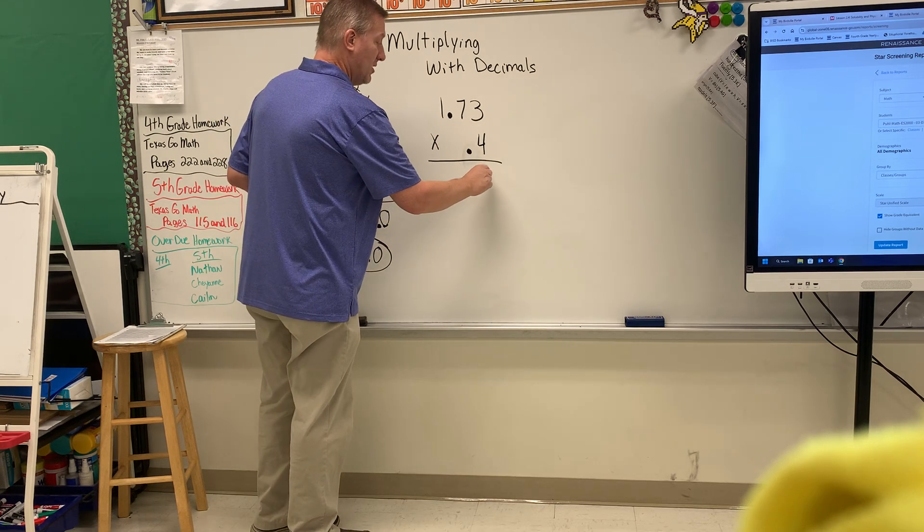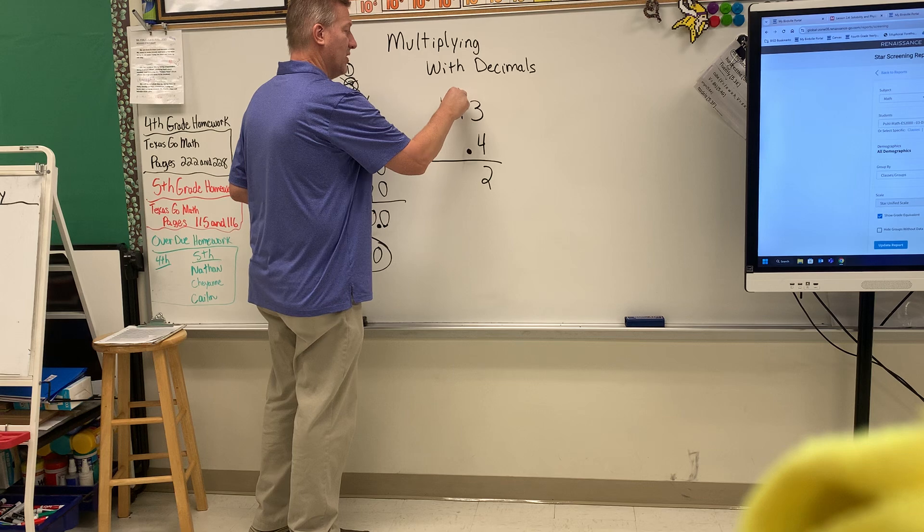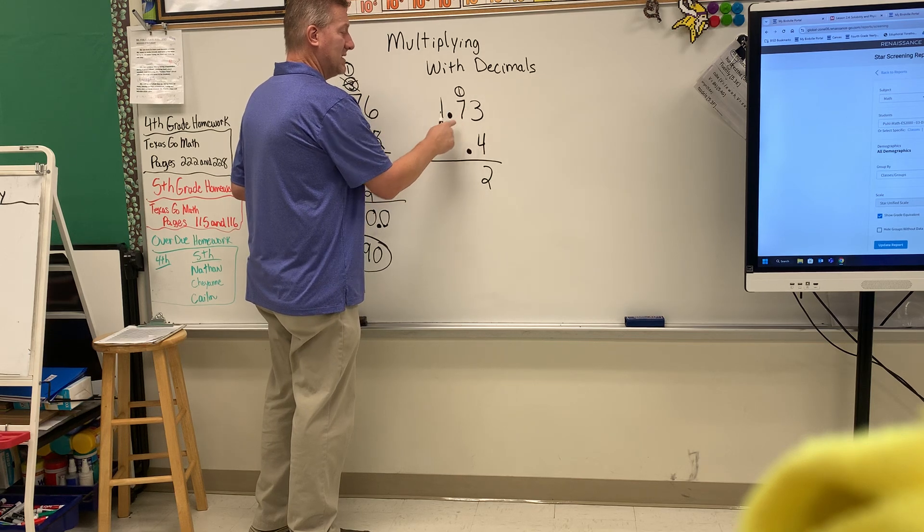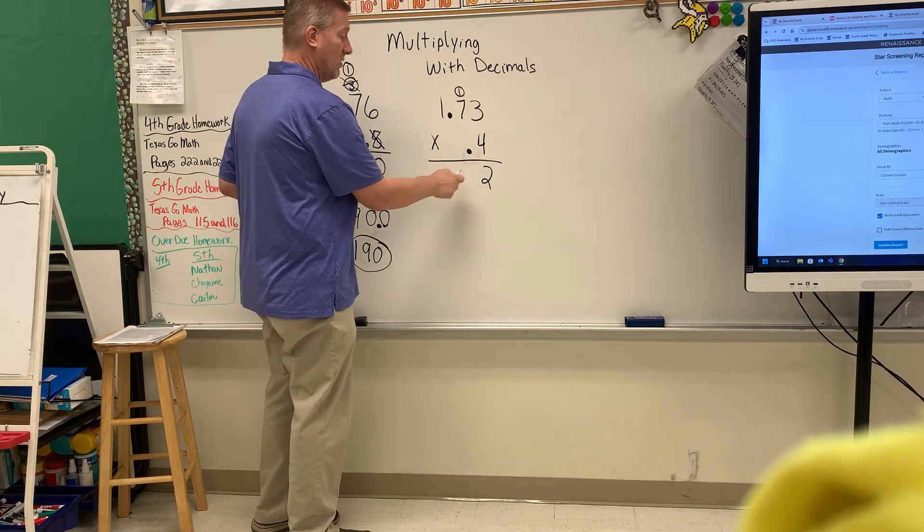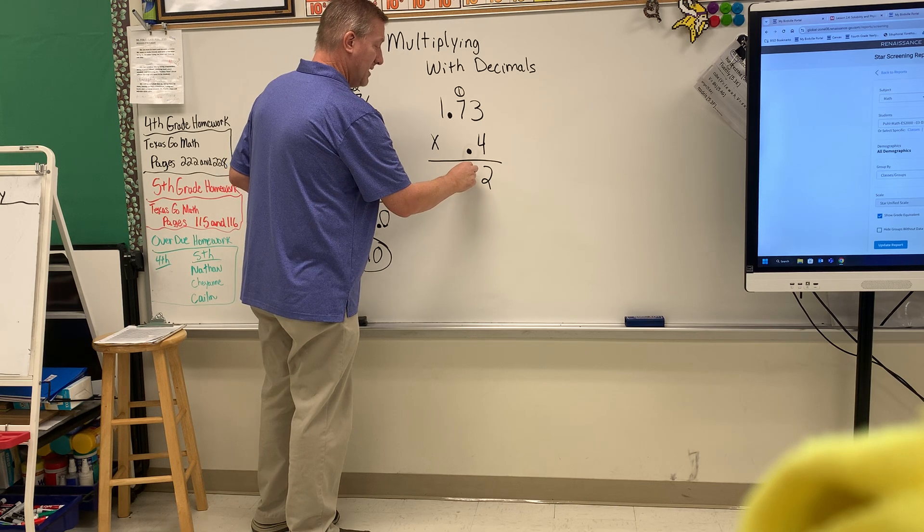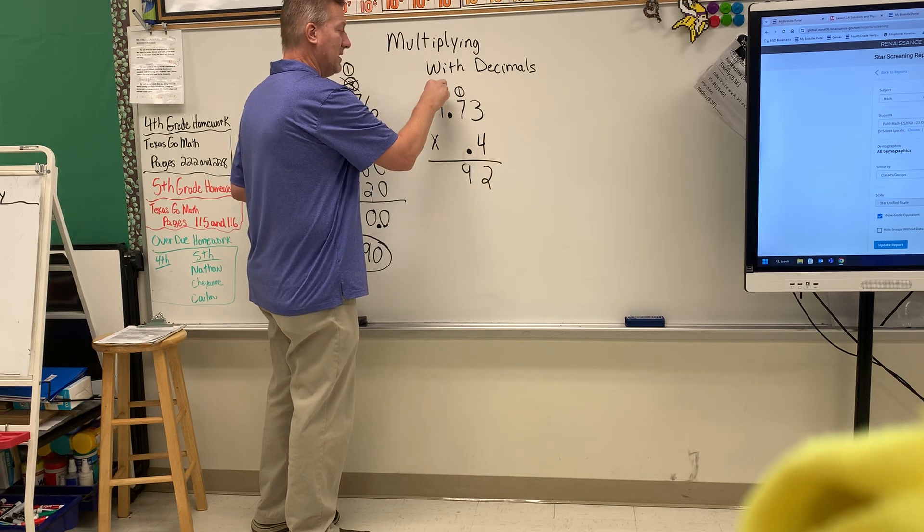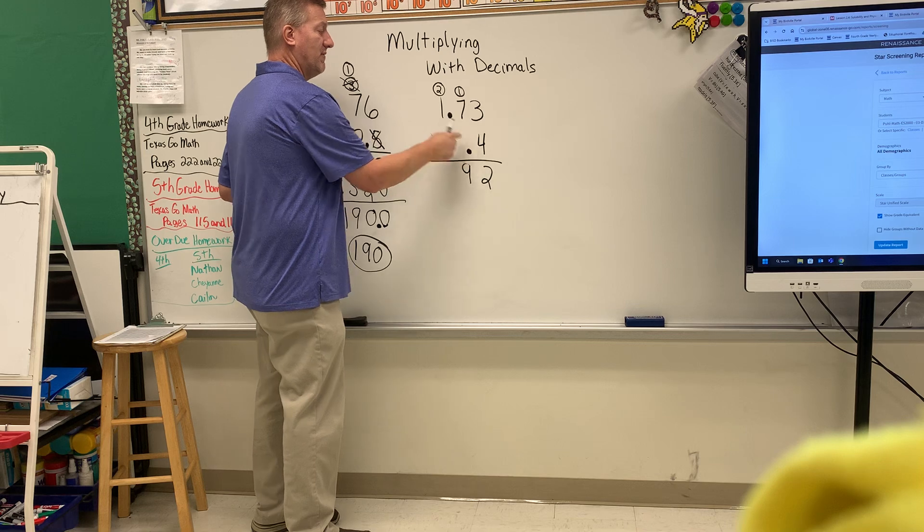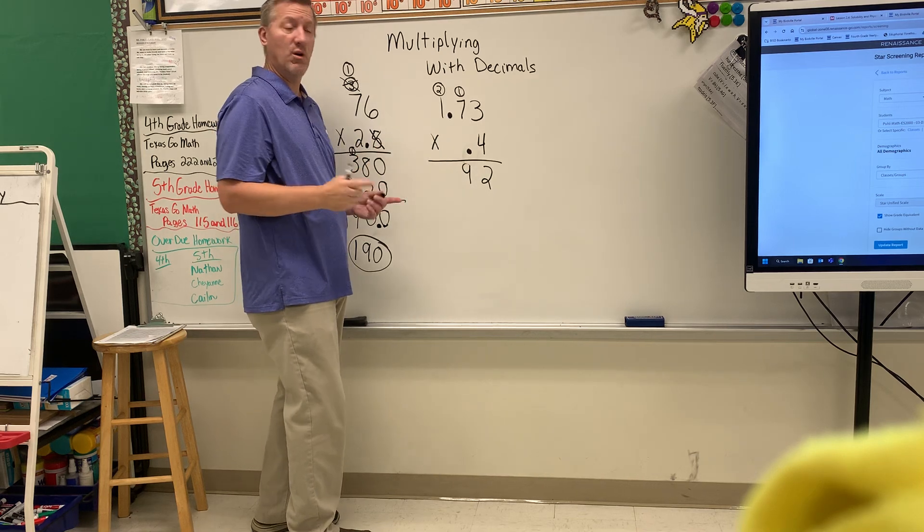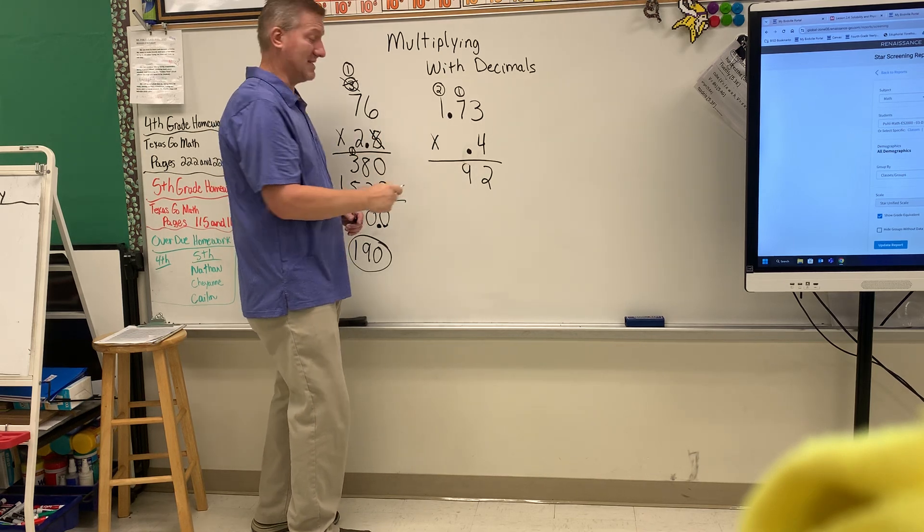3 times 4 is 12, carry your 1. 4 times 7 is 28 plus 1 is 29. So we put a 9, we carry our 2. 4 times 1 is 4 plus 2 is 6.